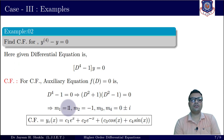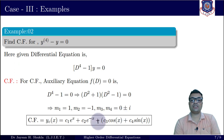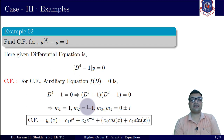Now let us write the complementary function for all four roots. For the real root +1: c1·e^x. For the real root -1: c2·e^(-x). For the complex roots 0 ± i, α = 0 and β = 1, so the contribution is e^(0)·[c3·cos(x) + c4·sin(x)] = c3·cos(x) + c4·sin(x). The order is 4 and there are four arbitrary constants c1, c2, c3, c4, as expected.